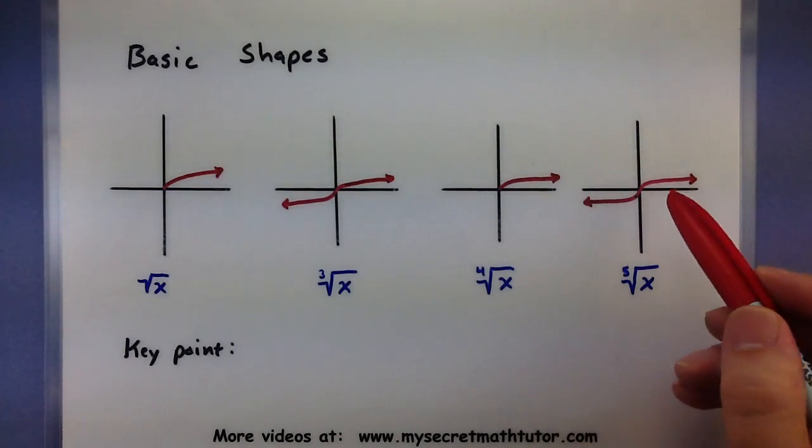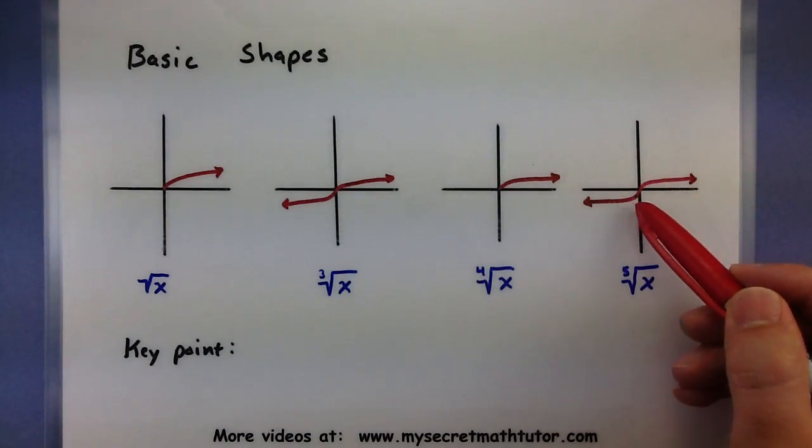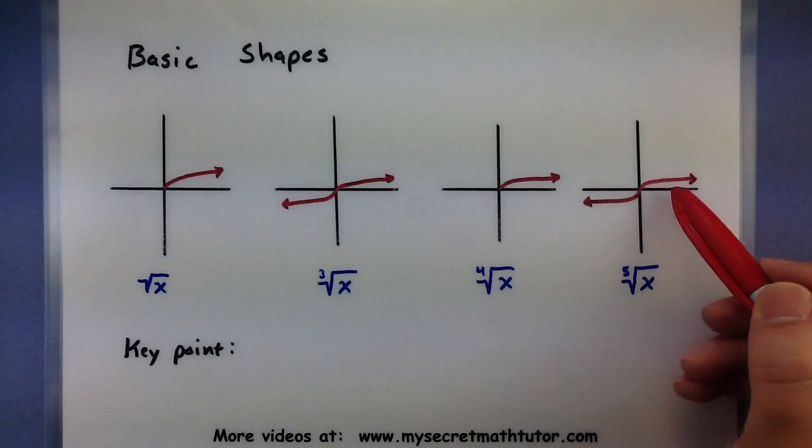Something like the fifth root well kind of looks like the cubed root. It goes through (0,0), goes through (1,1), goes through (-1,-1), and increases really slow after that.